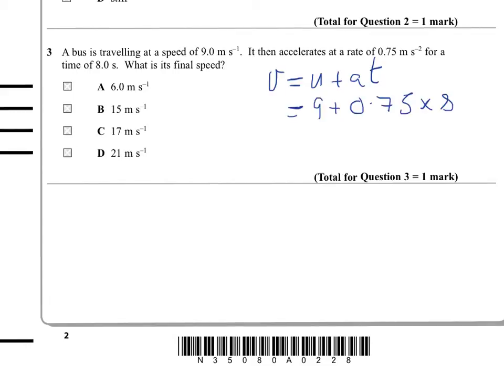9 was the initial speed, 0.75 is a, and the time taken for this change was 8 seconds. So we've got 9 plus 0.75 times 8, so that's 9 plus 6, which is 15.